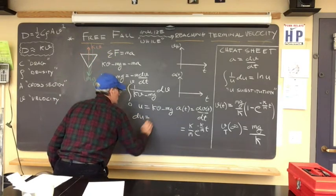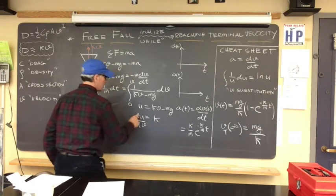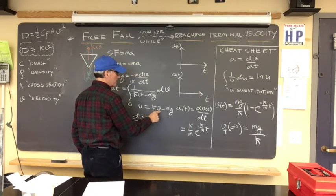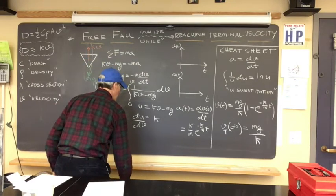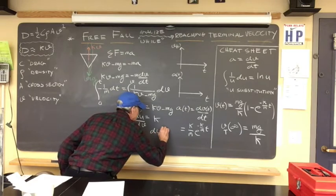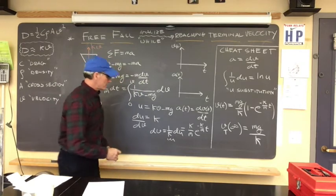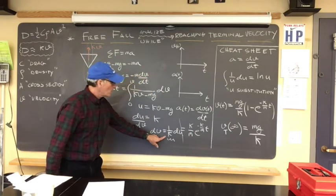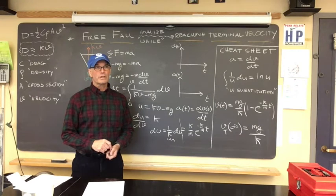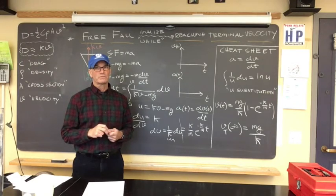Let's work this side. I told you this is the form 1/u·du. So let's do our u-substitution: u is going to equal kv minus mg. Having solved for u, we have to determine something that's going to help us. We have to make a modification to natural log of u.